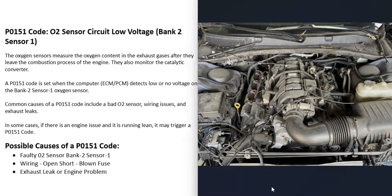Another possible cause is an exhaust leak or an engine problem causing the engine to run lean. An exhaust leak can throw the sensors off by allowing outside air into the exhaust, causing a reading of more oxygen than there should be — so the sensors may be working correctly but getting bad readings. If the engine is running lean, meaning more air than fuel is going into the cylinders, that could also trigger this code.